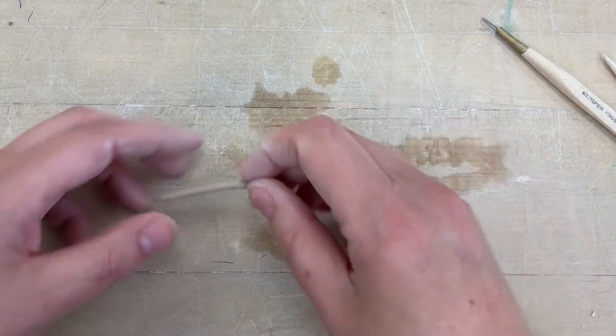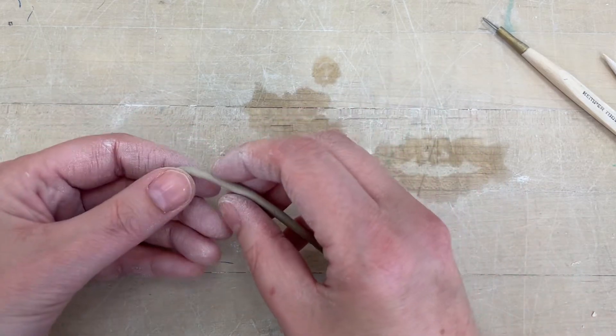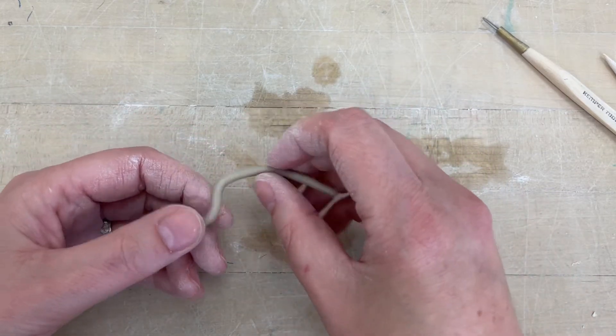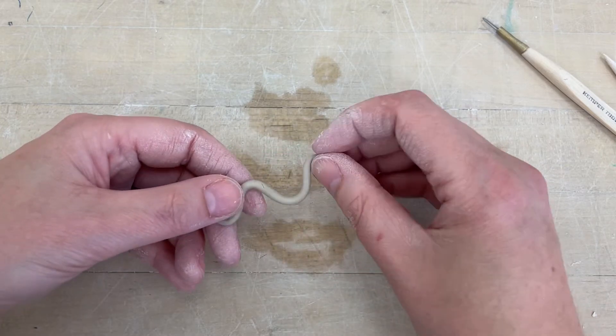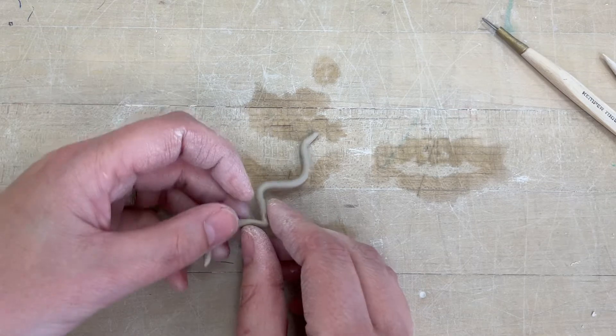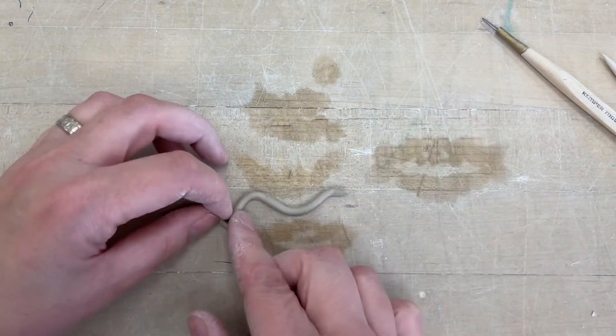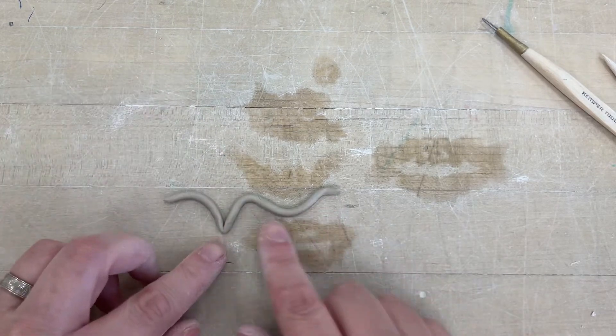Just anytime you want something that looks drippy, you're going to start with a super baby coil that you're going to kind of wobble in different areas. Some parts you might want to make a little bit more pointy and some parts you can kind of leave it a little bit more drippy, like a wider drip.